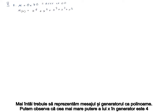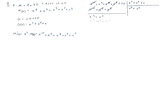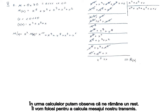First, we need to represent the message and the generator as polynomials. We can observe that the highest power of x in the generator is 4. To create enough space for any potential future bits, we multiply our message by x to the power of 4 and start dividing our new message by the generator. After the computations, we can observe we are left with a rest, which we'll use to compute our transmitted message.